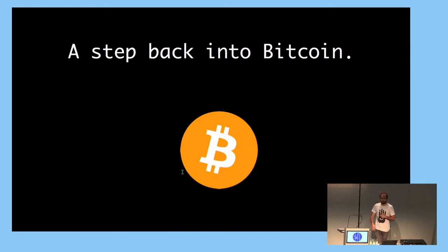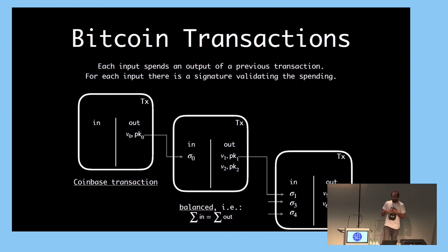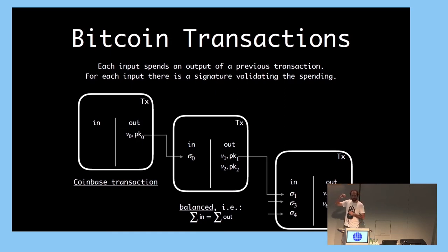Before talking about MimbleWimble itself, let me ask how many of you know what a UTXO is. In Bitcoin, at some point you have to inject money into the system. The way you do it is that you create a transaction that only specifies some outputs: you put a value and associate this value — this credit — to some verification key.